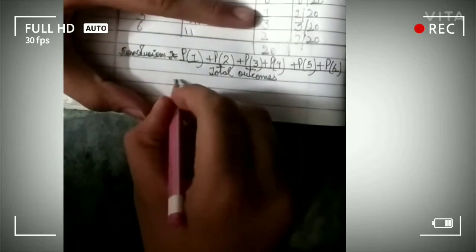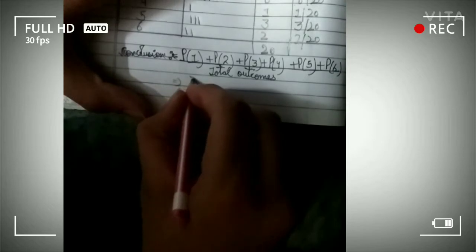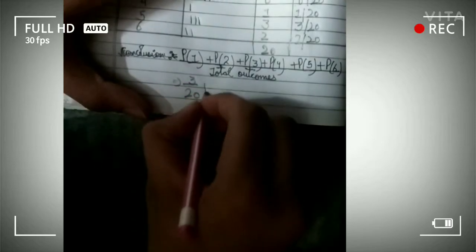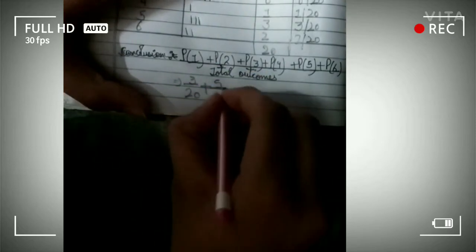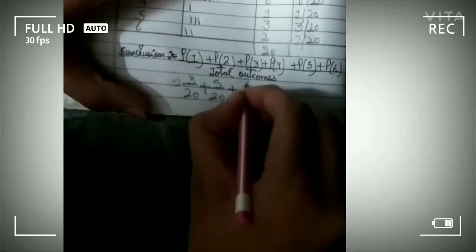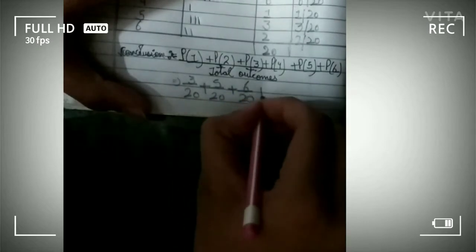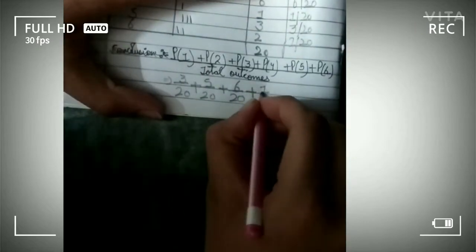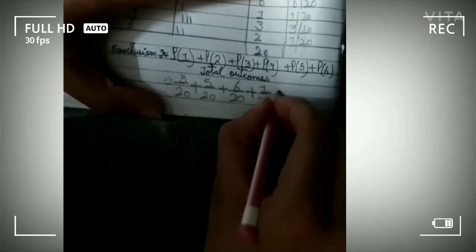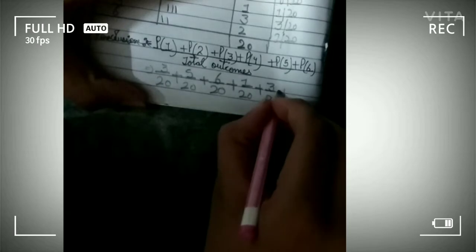Now, we have to add this. Let's add: 3 upon 20, plus 5 upon 20, plus 6 upon 20, plus 1 upon 20, plus 3 upon 20, plus 2 upon 20.